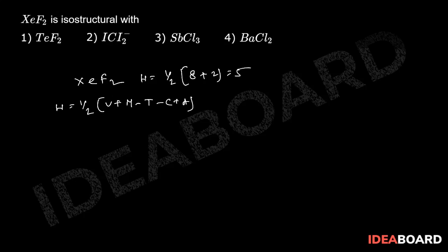The hybridization of xenon is sp³d, and that is trigonal bipyramidal as the basic structure, and there are 2 bond pairs plus 3 lone pairs.